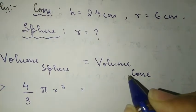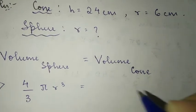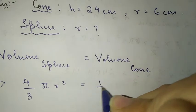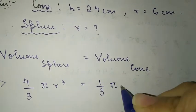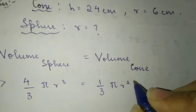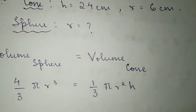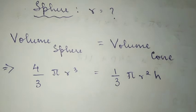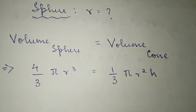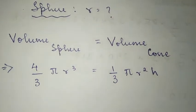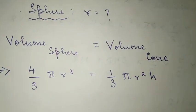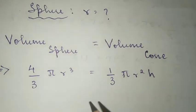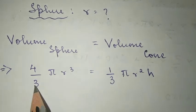The volume of the cone is equal to 1 by 3 pi r squared h.